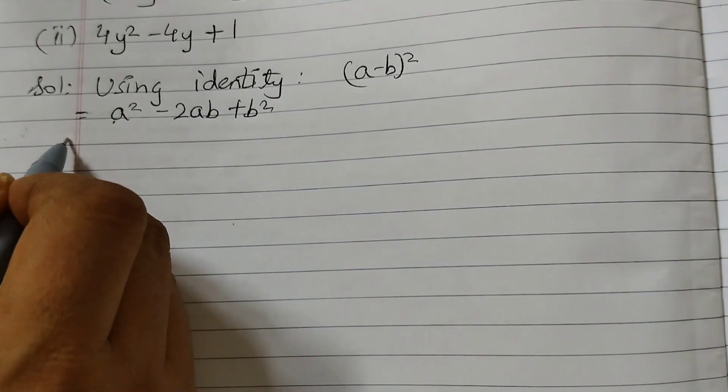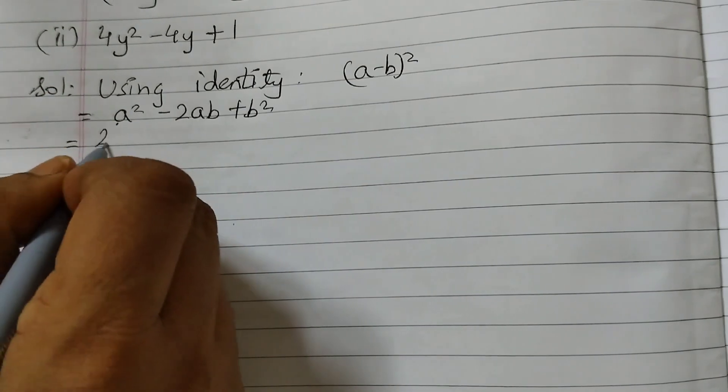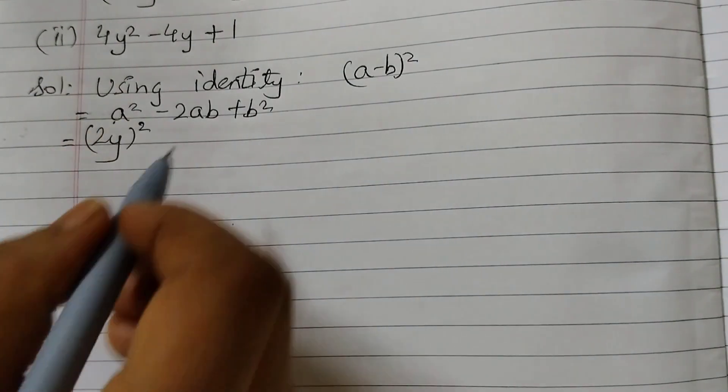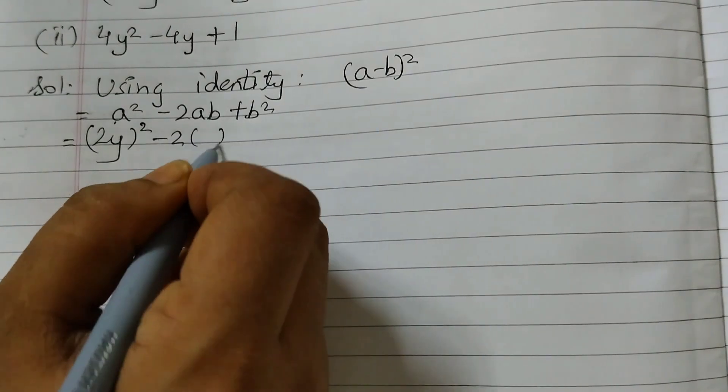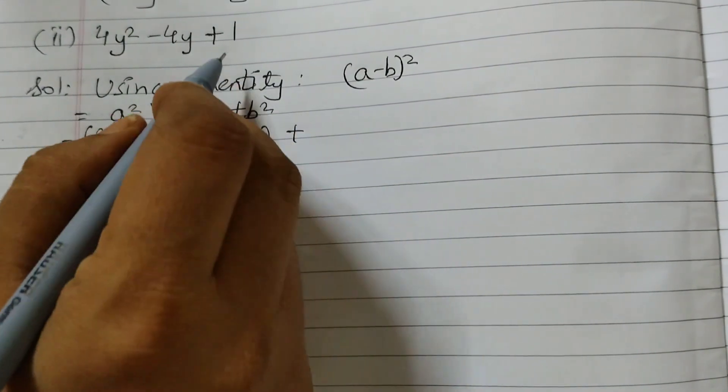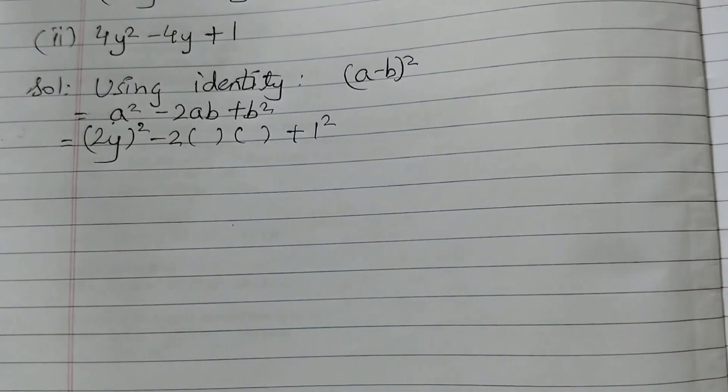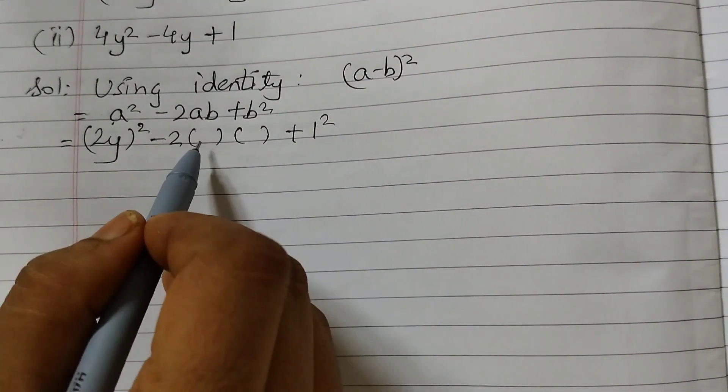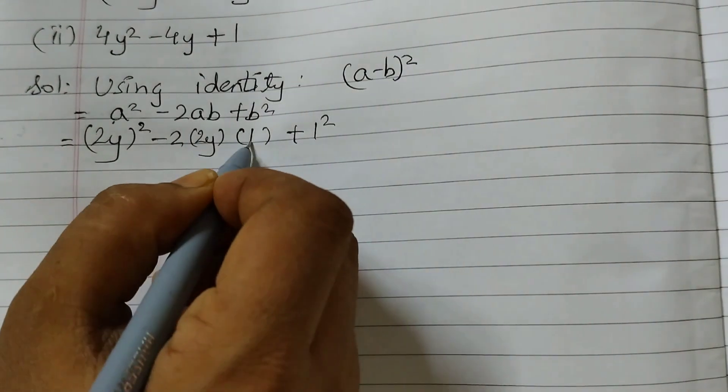So a squared is what? 2y the whole squared, because 2y into 2y is 4y squared minus 2. Leave these 2 as of now. Plus b squared 1. So we can write 1 as 1 squared. So this is a and this is b. We will write 2y and 1.